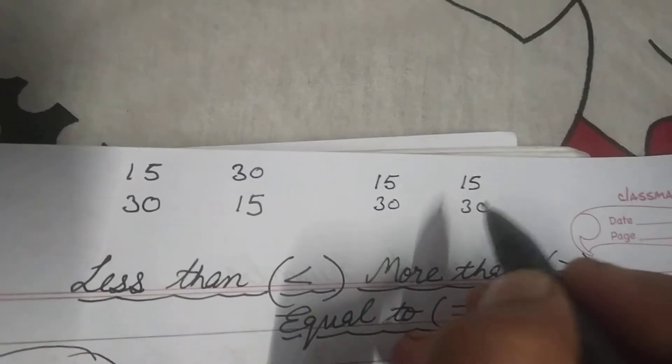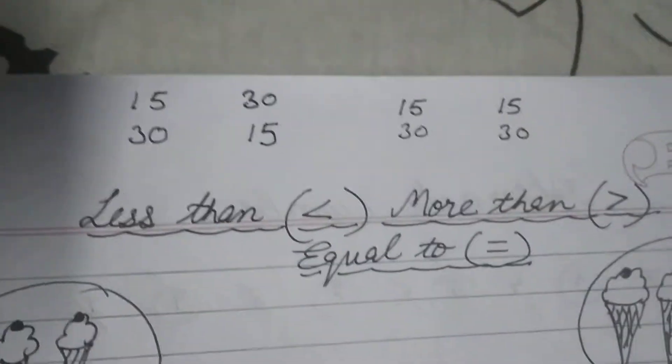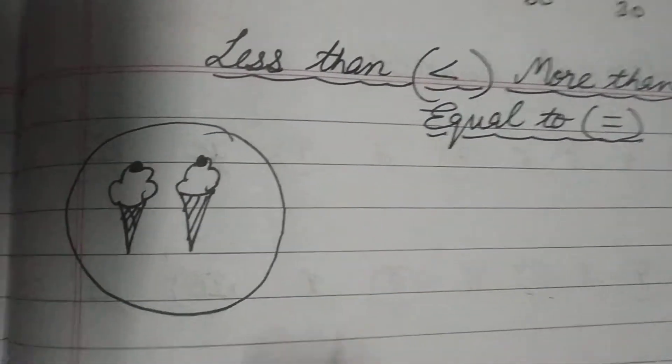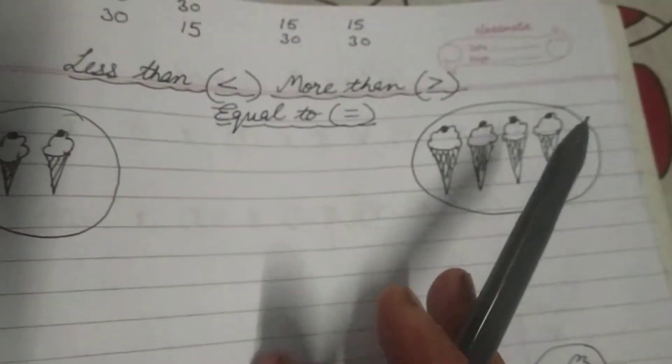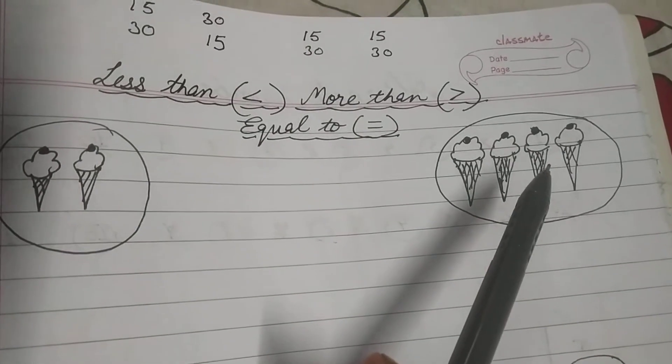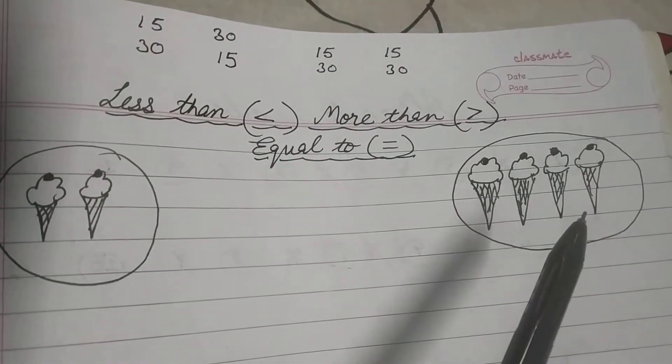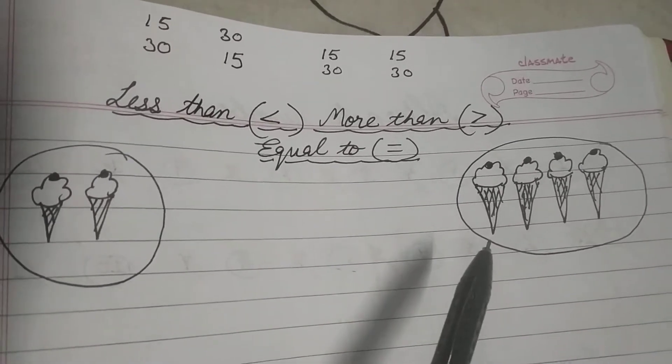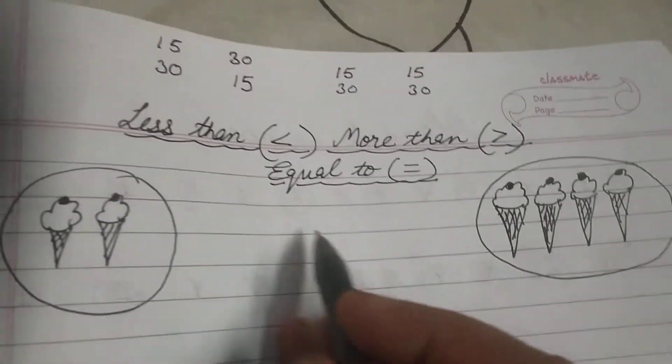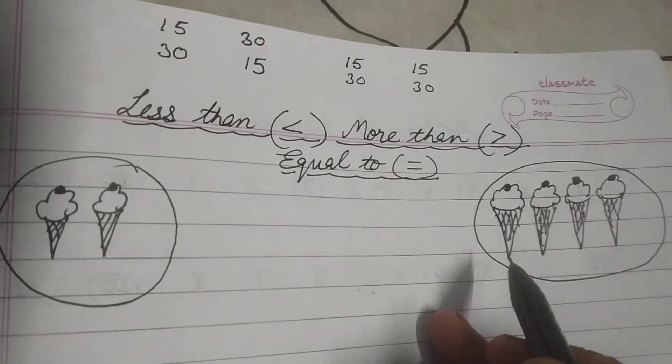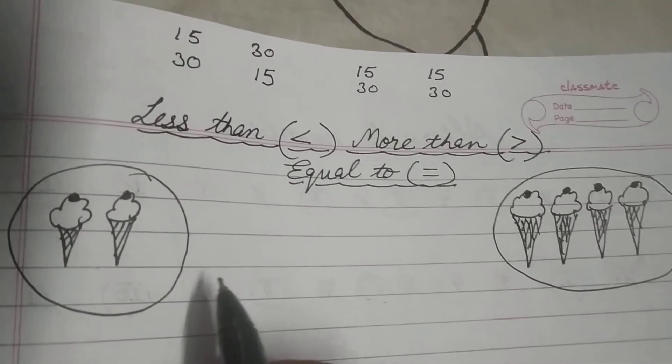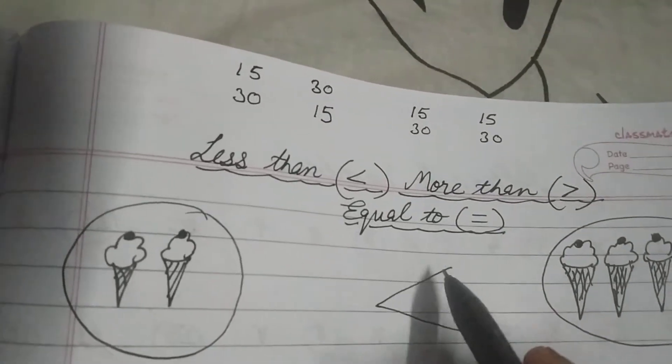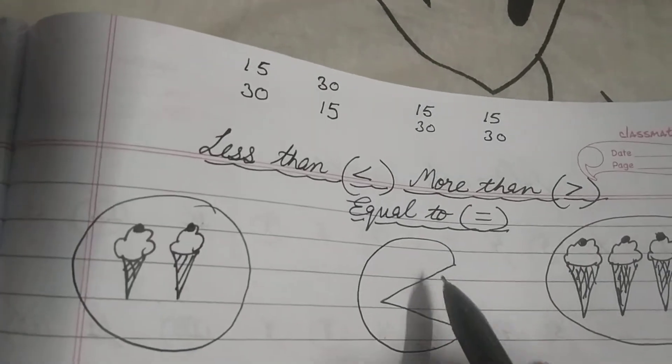Ab hum karenge in ki symbols ke baare. Let's have an example. Now here I have 2 ice creams in a plate, and here I have 4 ice creams in a plate. Ab aapko ice creams pasand hai, mujhe toh bahut pasand hai. If someone asks me ki main konsi ice cream khaungi, of course zyada wali ice creams chahiye hai. Here there are 4 ice creams, here there are only 2. So I'll open my mouth this side. Suppose this is my mouth, I go like this.